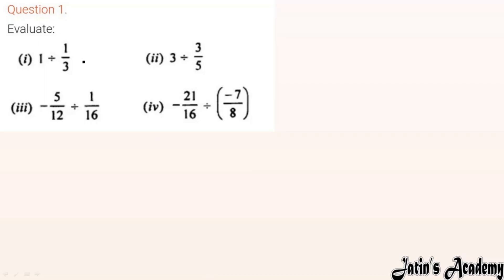In this exercise we are going to divide rational numbers. For the first question, part (i): 1 ÷ (1/3). We will keep 1 as such, then divide converts to multiply, and we take the reciprocal of 1/3 which becomes 3/1.